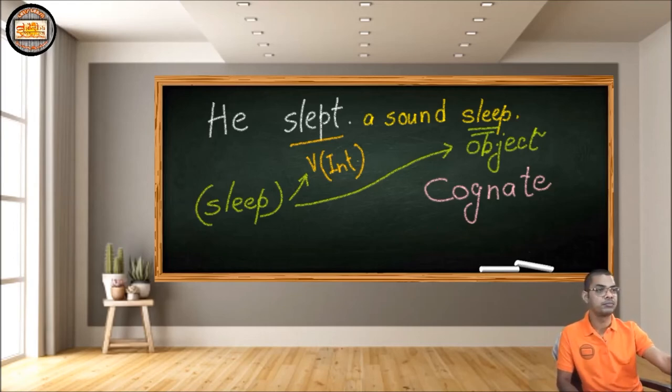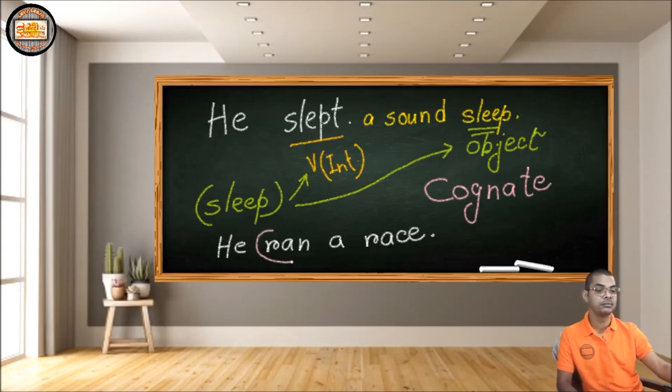There's another example. Let's have another example and it would be easier to understand: 'He ran a race.' If you look at this sentence, 'run' and 'race' are the same thing, but we have used 'run' as the verb and 'race' as the object, and we call it a cognate object.